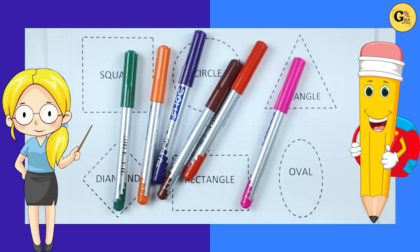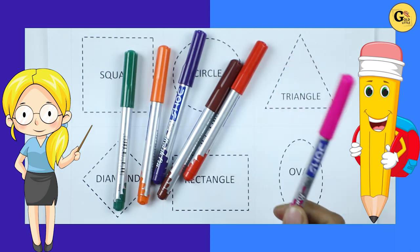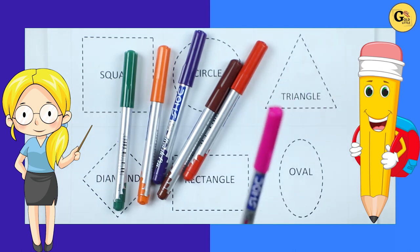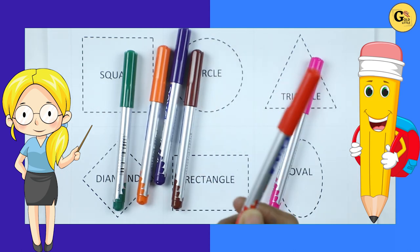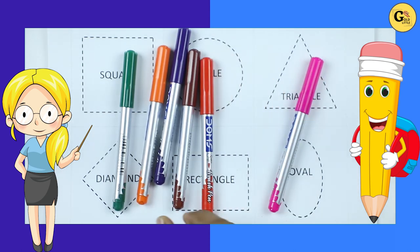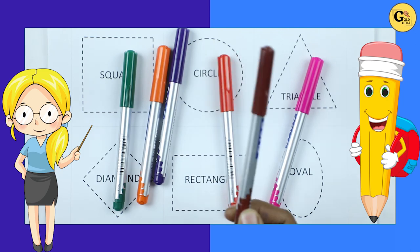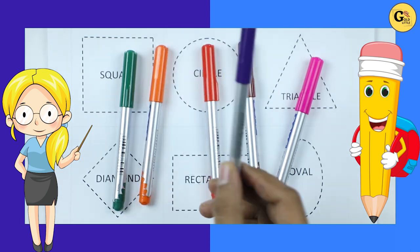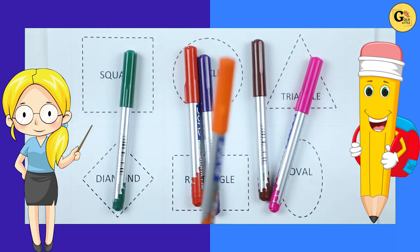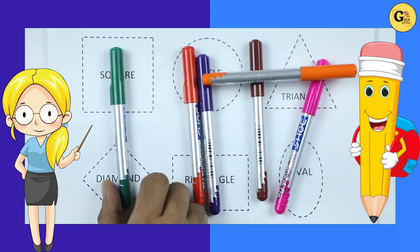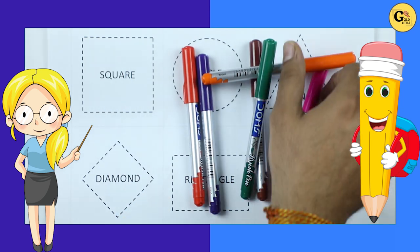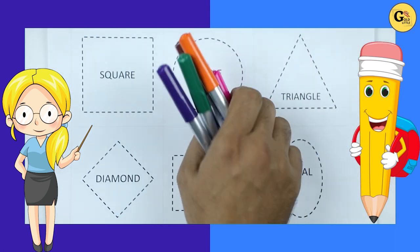We learn shapes with some colors. It's pink color, red color, brown color, purple color, orange color, green color. So, let's start.